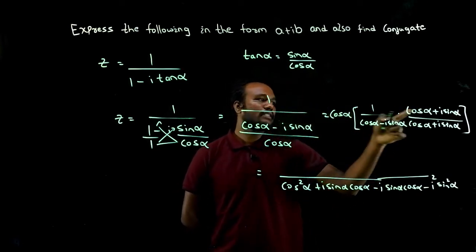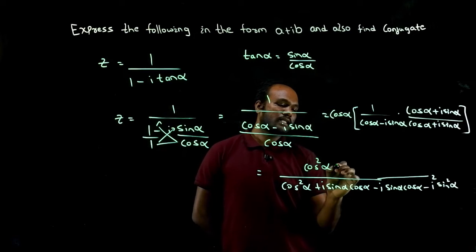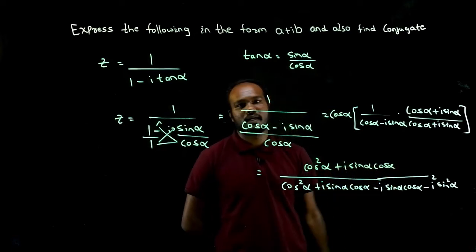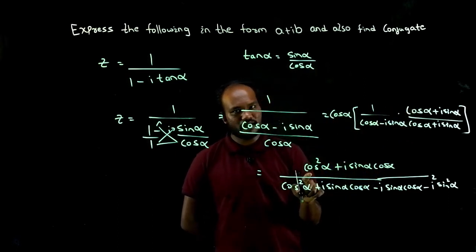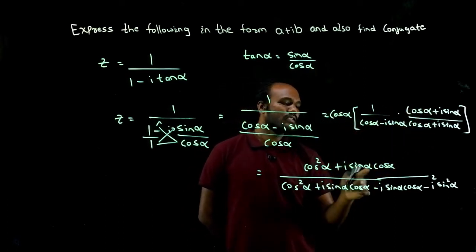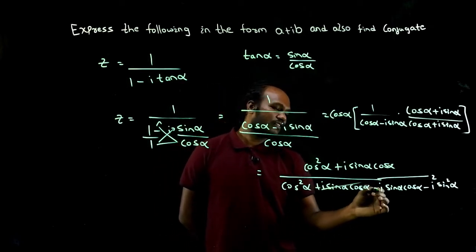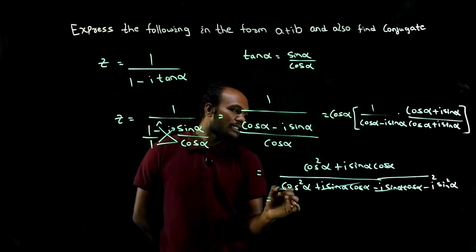In the numerator: cos into cos is cos square alpha, cos into sine is I sine alpha cos alpha. This into this, cos alpha into cos alpha is cos square alpha, cos alpha into sin alpha is cos alpha sin alpha. See here, plus I sin alpha cos alpha minus I sin alpha cos alpha get cancelled and cos square alpha.